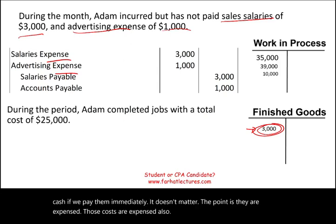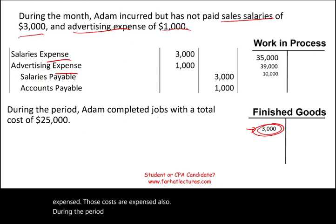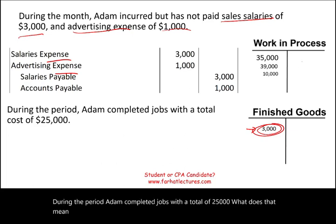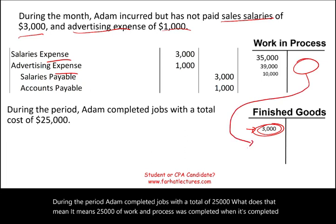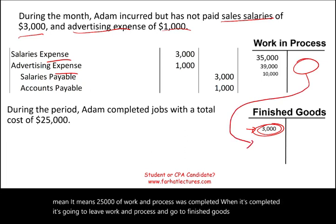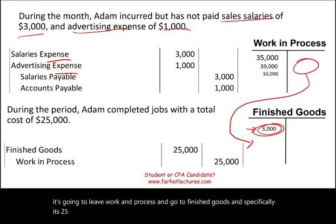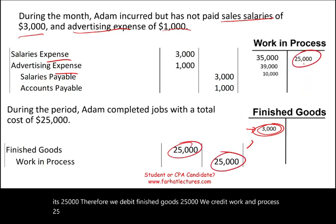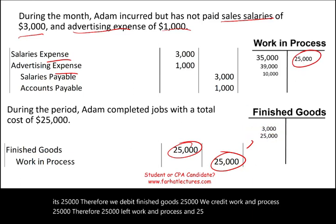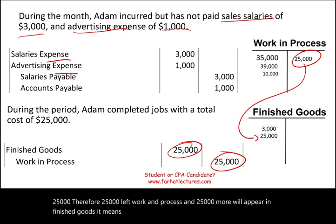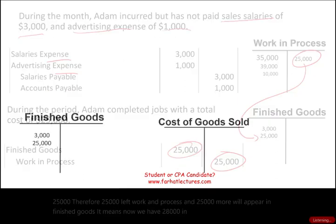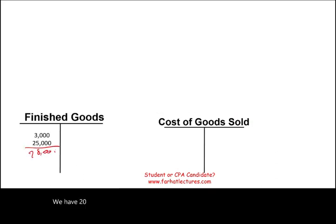During the period, Adam completed jobs with a total cost of $25,000. That means $25,000 of work in process was completed and transferred to finished goods. We debit finished goods $25,000 and credit work in process $25,000. So $25,000 left work in process, and now we have $28,000 in finished goods ready to be sold.